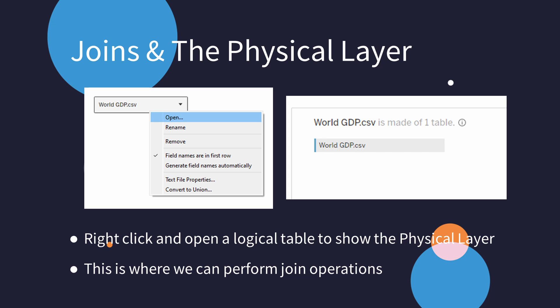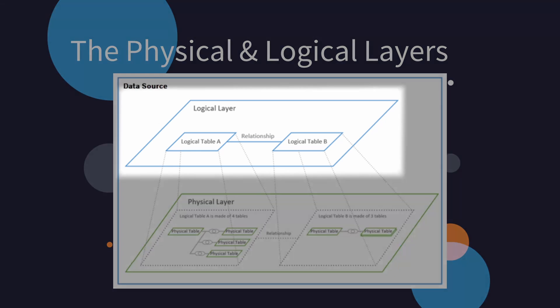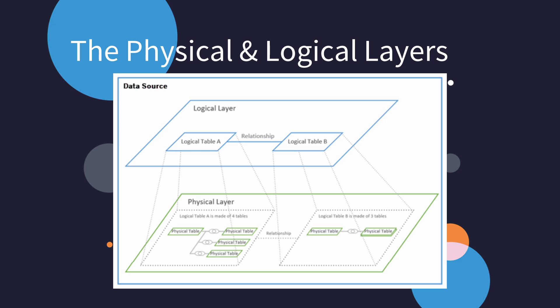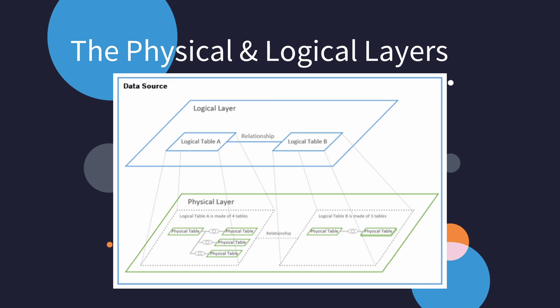You can see here that when you right-click on a logical table, you can open it up to get to the physical table on the physical layer. It's from here that you create a join. If you're having trouble with these layers, take a look at this visual representation of the two layers. We have two logical tables on the logical layer connected together by a relationship, and each of those logical tables has within it multiple physical tables on the physical layer below, connected by joins, indicated by the Venn diagram symbols between them.